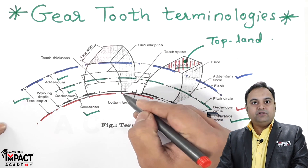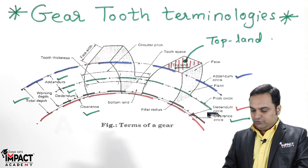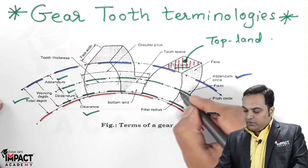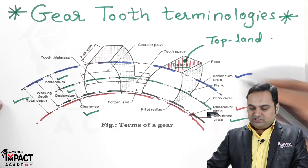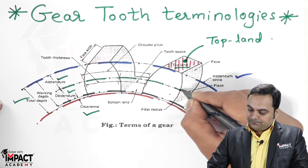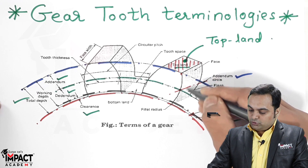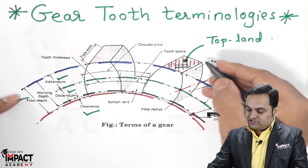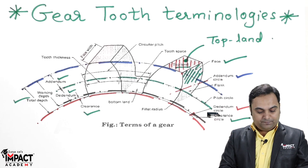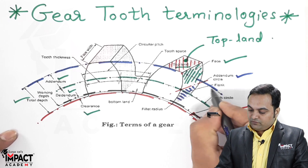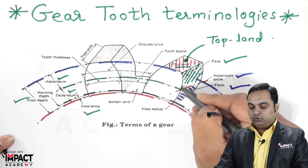The profile of the teeth is divided into two parts. When we take the pitch circle diameter and draw a line parallel to the top land, it divides the gear tooth profile into two parts: the top part is called the face of the gear teeth, whereas the bottom part is called the flank.